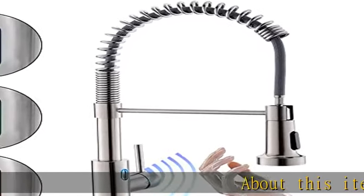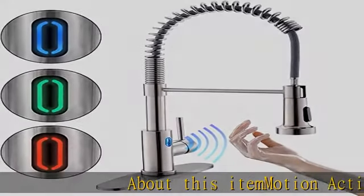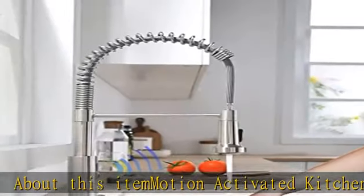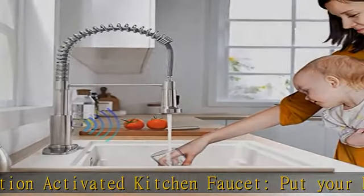This is a motion-activated kitchen faucet. Put your hand near the motion sensor to activate the water flow. Put your hand near it again to turn the water off.